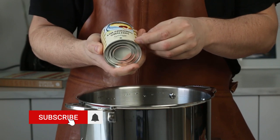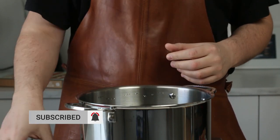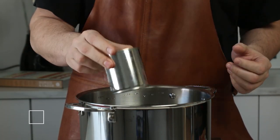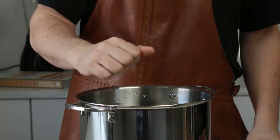This is gonna be submerged in water and boiled for about four hours. So start with peeling off the paper so we don't make a mess in the pan.